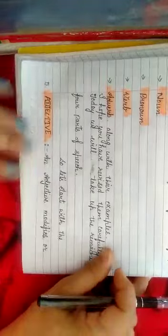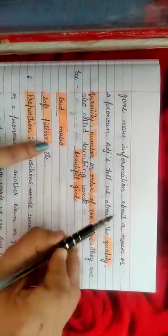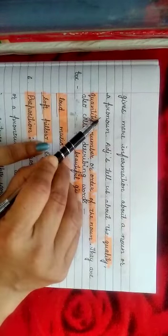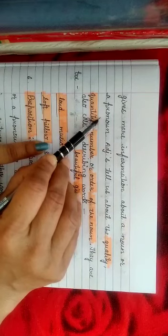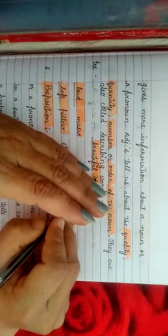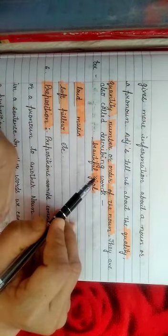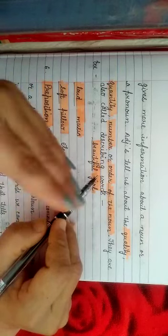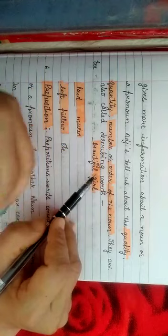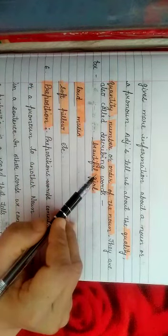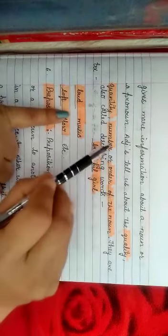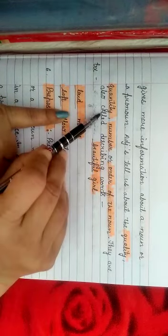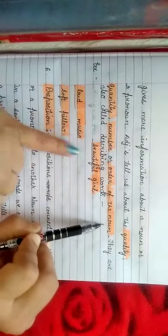The fifth part of speech is adjective. An adjective modifies or gives more information about a noun or pronoun. Adjective ko hum Hindi mein visheshan bhi bolte hain. Visheshan ka matlab hota hai kisi bhi noun ko describe karna. For example, good girl - the word that describes the noun, we call it adjective. Adjectives tell us about the quality, quantity, number or order of the noun.